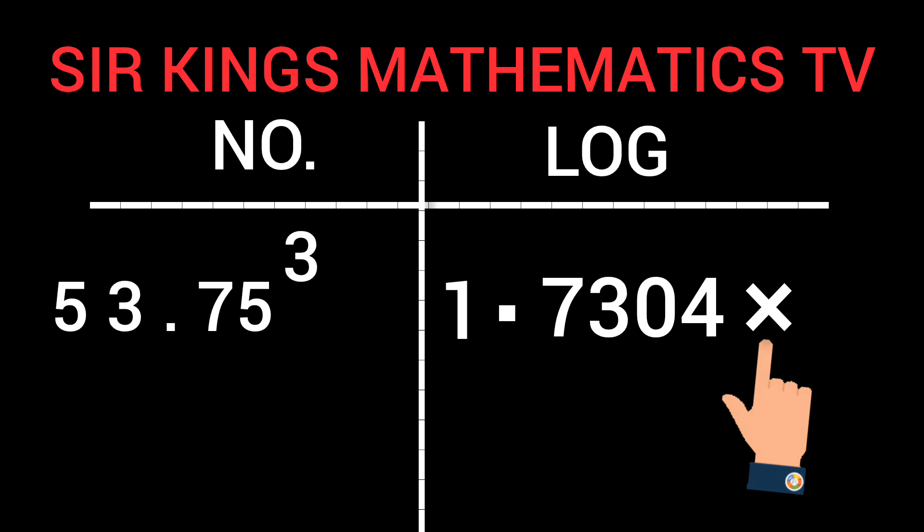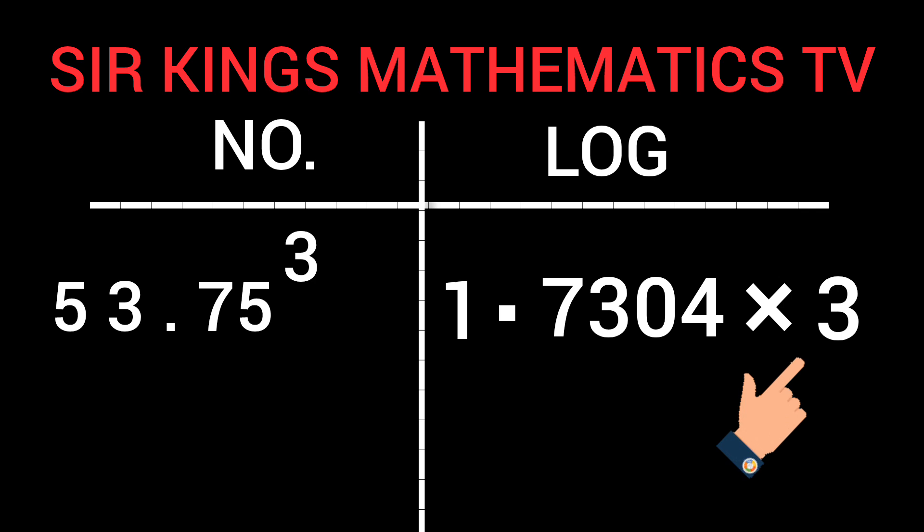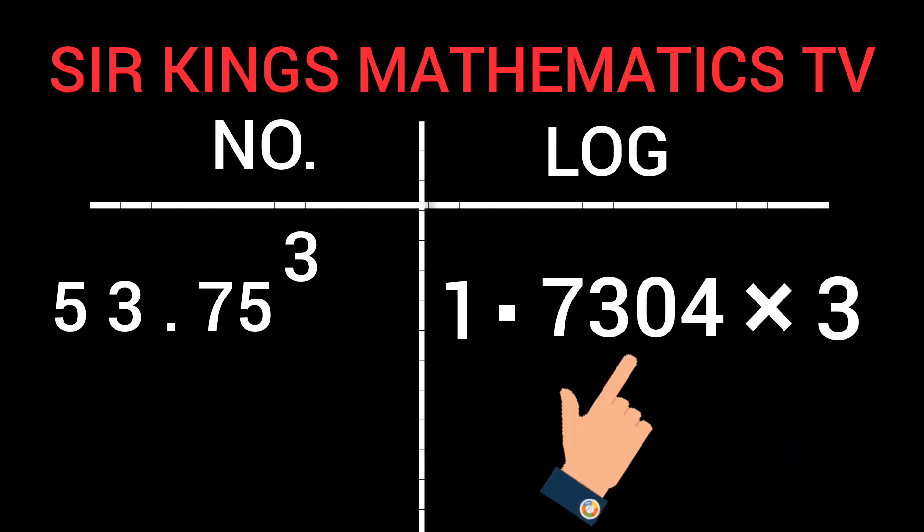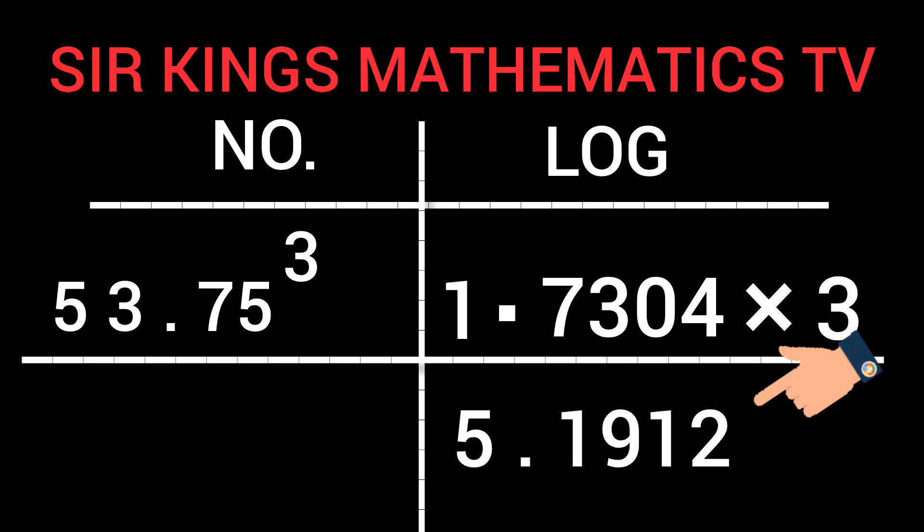Write down times this power 3. Write it down here. 1.7304 times 3 will give us 5.1912. Write it down here. Let us find the antilog of this.